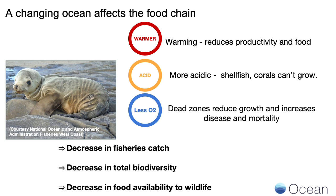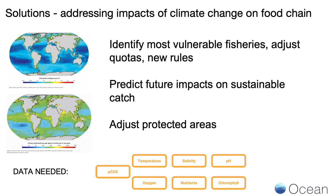Combined — warmer, more acidic, less oxygenated ocean — we can see decreases in fish catch, a loss of biodiversity, and ultimately a decrease in food availability to wildlife. Ocean data can help us deal with this problem. We can identify fisheries most vulnerable to a changing ocean and adjust our quotas to account for fisheries that may not be as robust or fast-growing as they were in the past. We can predict what future fish catches will be, and we can adjust our marine protected areas — places that protect juvenile fish, fish nurseries, and the core ecosystem important for biodiversity and productivity. But to do this requires data.